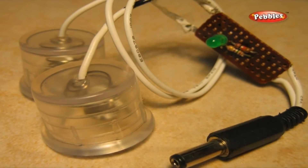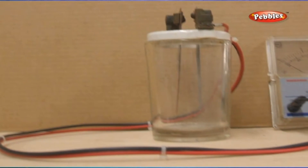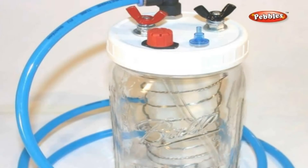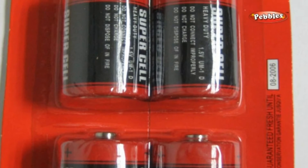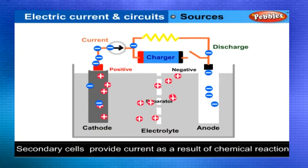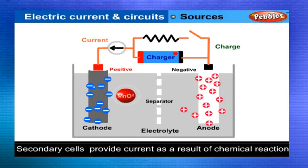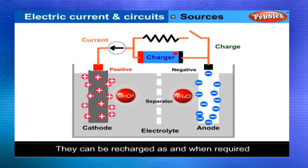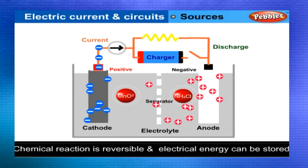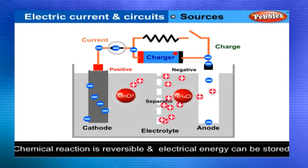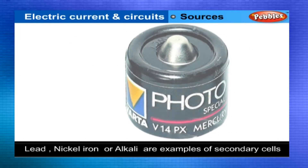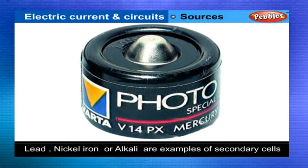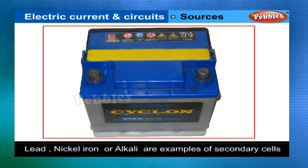Simple voltaic cell. The secondary cells, or accumulators, provide current as a result of a chemical reaction, and they can be recharged as and when required. Here the chemical reaction is reversible, and the electrical energy can be stored in them. Lead accumulator, nickel-iron accumulator, and alkali accumulator are examples of secondary cells.